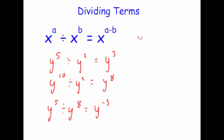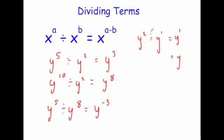There's something that's very common: y squared divided by y. If there's no number you can put a 1 there, so 2 take away 1 is 1, giving y to the 1. But normally in algebra you just write that as y. So y squared divided by y equals y, and that makes sense because y times y is y squared.